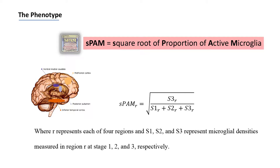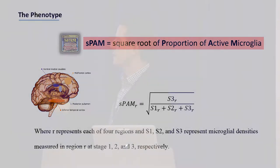Previous studies looked at the density of stage three microglia as a phenotype, or stage one. If all three stages increase, it's just an elevated number of microglia. An elevation in stage three means more active microglia — those with morphological characteristics of activity or inflammation. By taking the proportion of stage three over the total and transforming it with a square root, I'll show this is a very informative metric for understanding microglial activation.